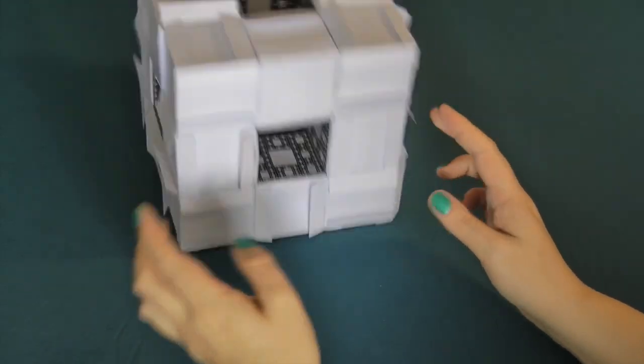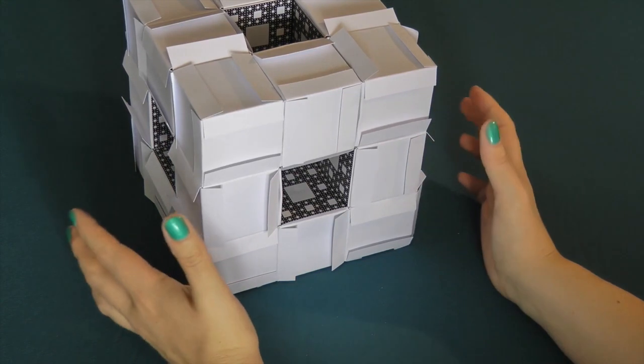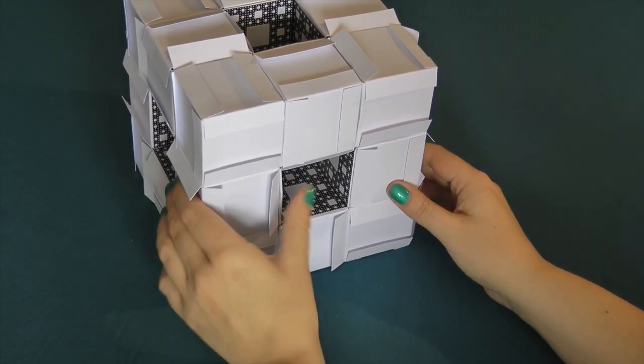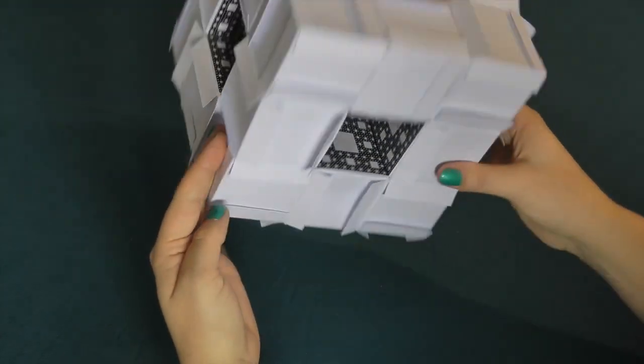This is a level 1 sponge. You'll need 20 of these to make a level 2 sponge. I'm now going to clad the outside surface with cards.